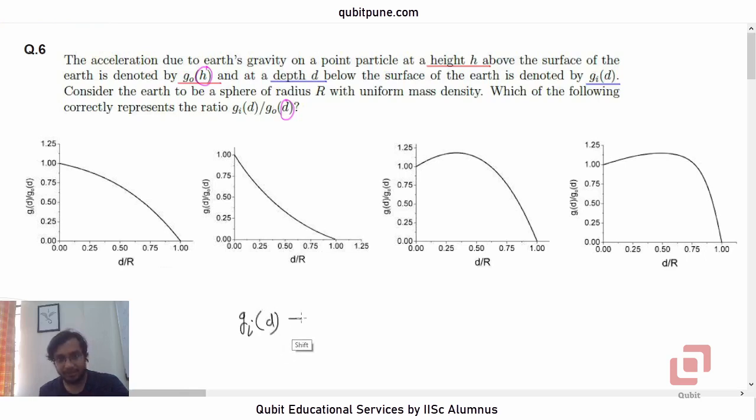G_d, I am going to assume that G is our acceleration due to gravity at the surface of the Earth. So G_d is G times bracket 1 minus d upon R. This is the standard formula.